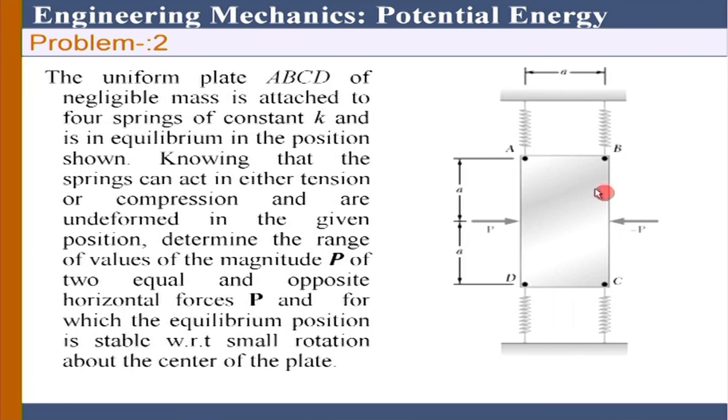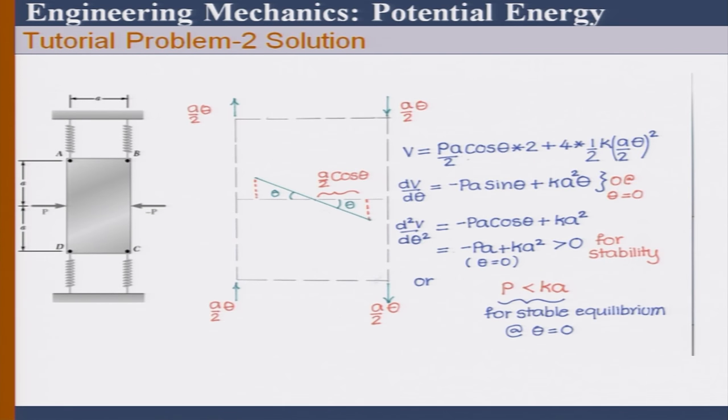Think of the potential energy concept and give the answer — P should be in terms of K and A. What is the condition between P, K, and the geometry? The main thing is to brainstorm how to get the potential energy function. Give it a small rotation theta and try to see how to establish the potential energy function — the rest is simple math. P should be less than K; as long as P is less than K, we have stable equilibrium.